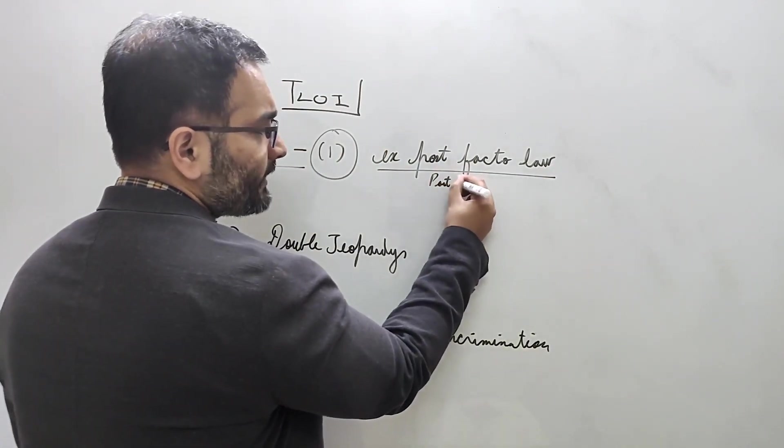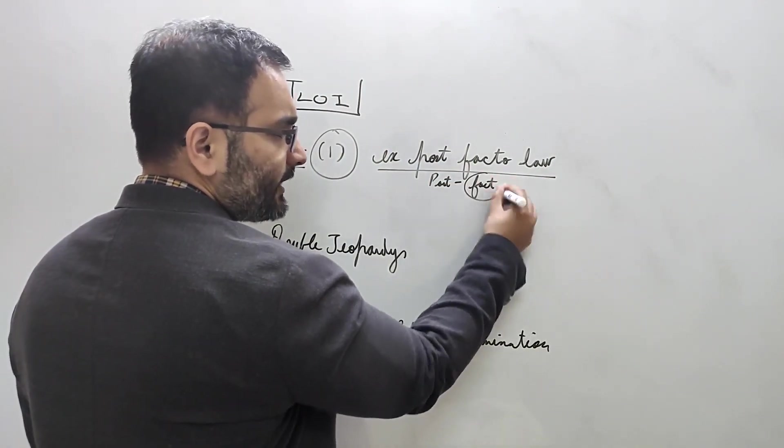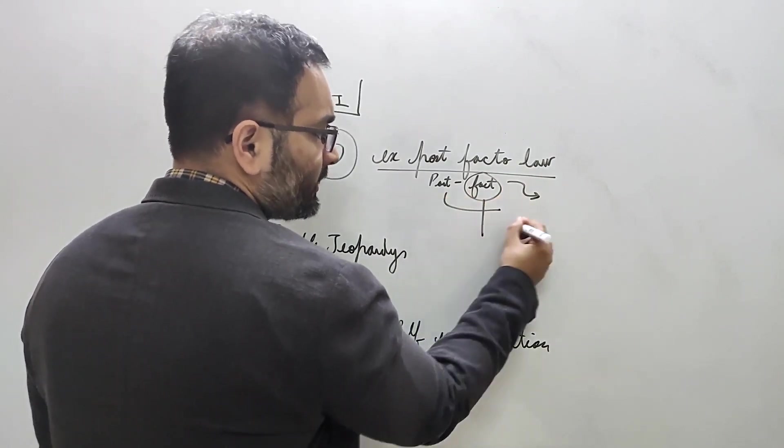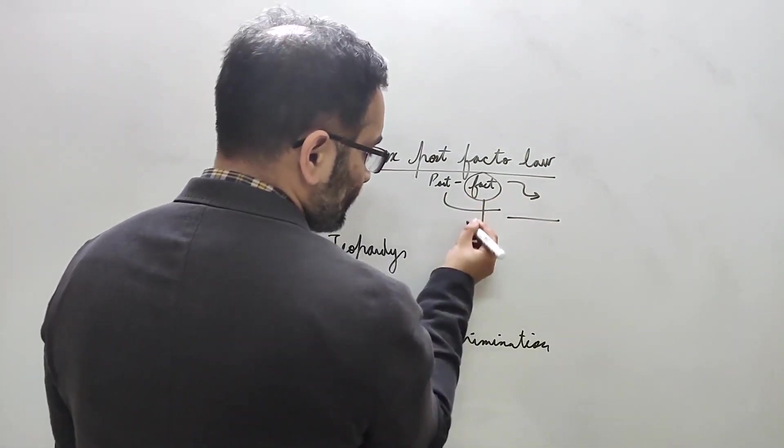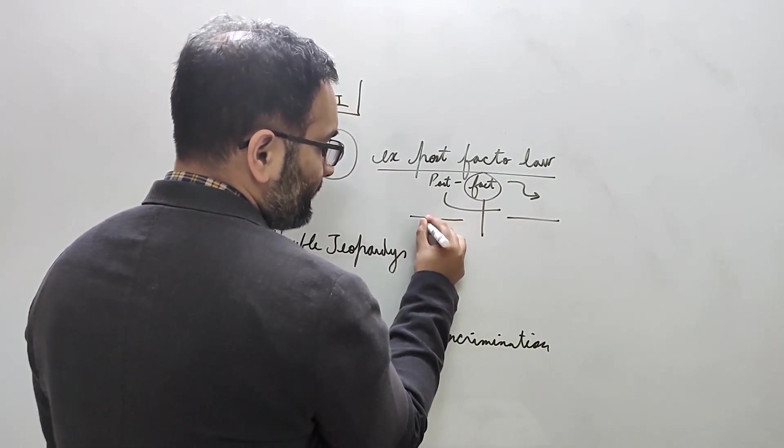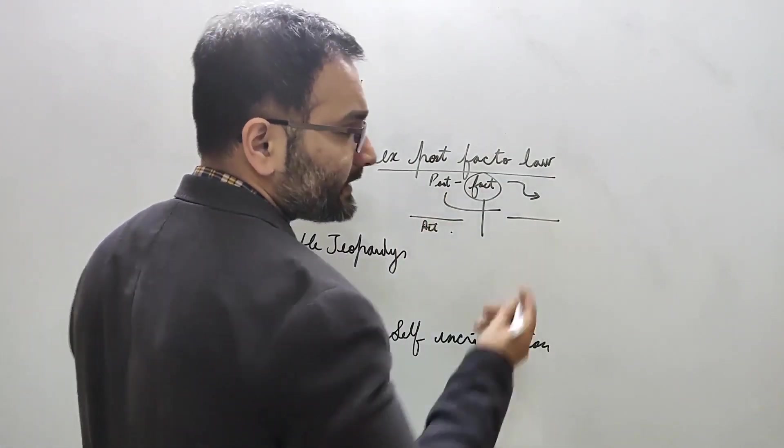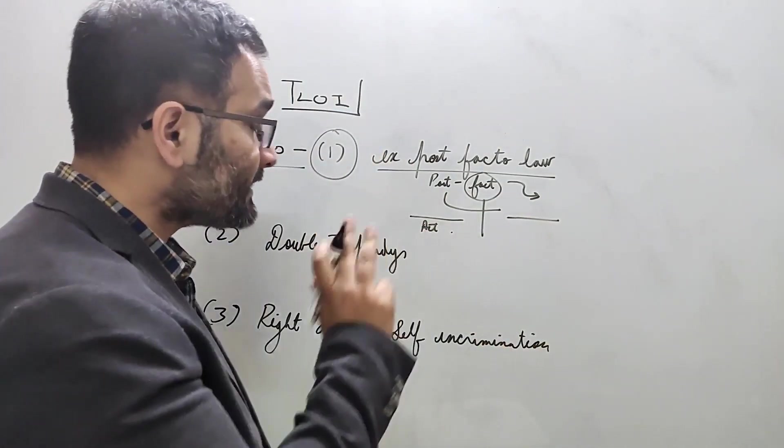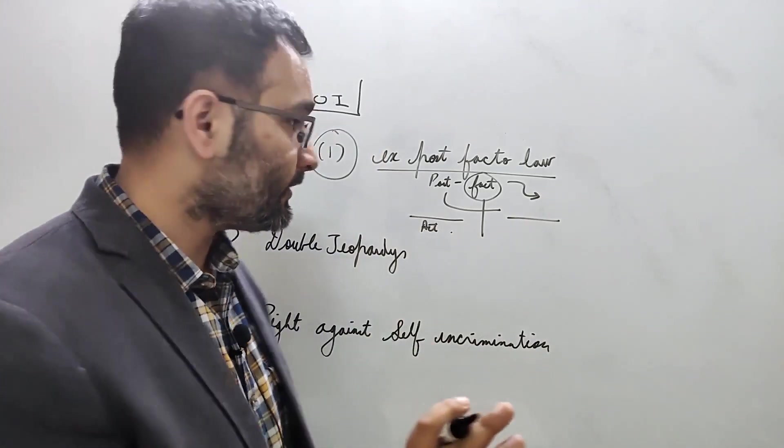Fact ke baad, after the fact has occurred, you make a law and then apply it to acts that happened before. This is known as an ex post facto law. Article 20 says that this is not allowed in criminal matters.